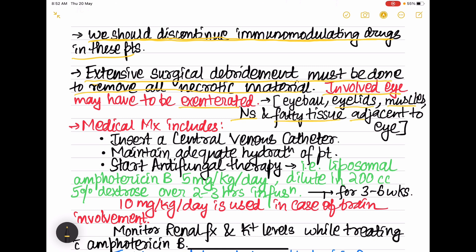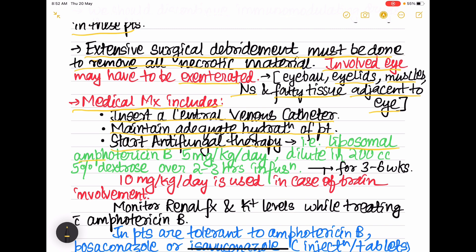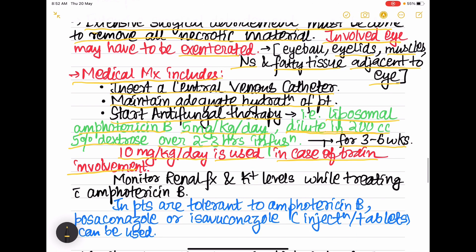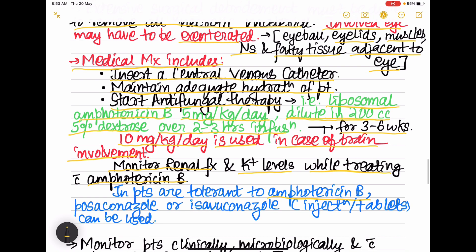For medical management, insert a central venous catheter, maintain adequate hydration, and start antifungal therapy. The antifungal of choice is liposomal amphotericin B, given at 5 mg/kg/day diluted in 200 mL of 5% dextrose over a 2–3 hour infusion for 3–6 weeks. For brain involvement, use 10 mg/kg/day. Monitor renal function and potassium levels. In patients not tolerating amphotericin B, posaconazole or isavuconazole can be given as injection or tablets.